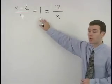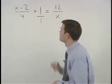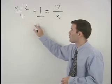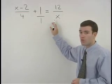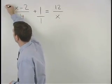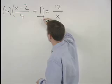Think of the 1 in this problem as 1 over 1. The common denominator for 4, 1, and x is 4x. So multiply both sides of the equation by 4x to get rid of the fractions.